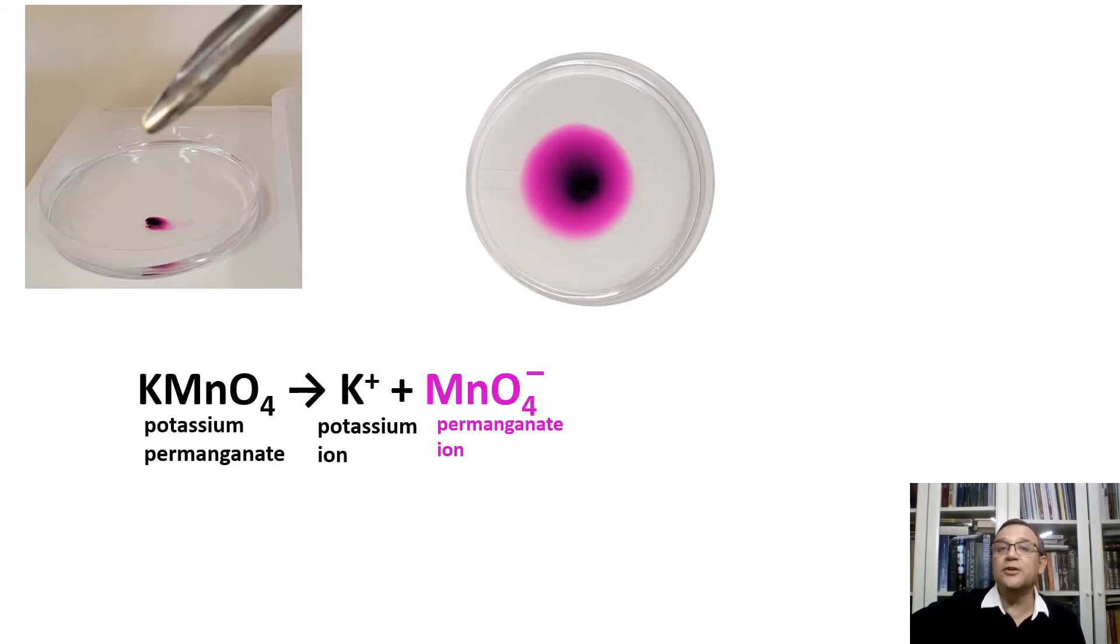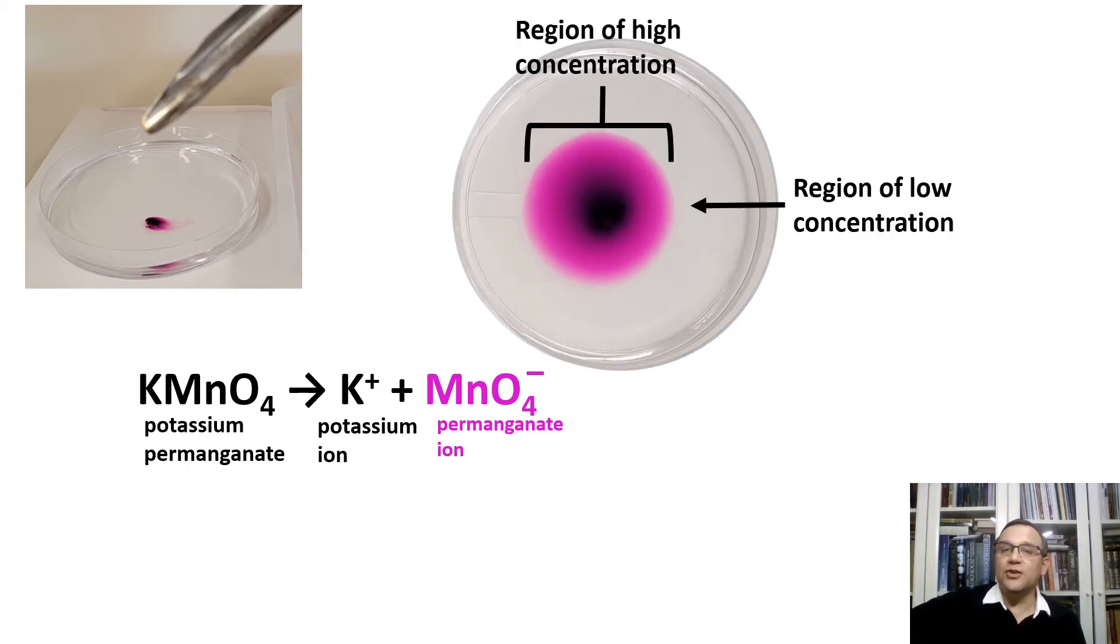As the crystals dissolve, the immediate area around the crystals becomes highly concentrated with potassium permanganate ions. This creates a region with high concentration of potassium permanganate ions. Do you see the dark purple color is concentrated around the crystals? Here they are, the ions of potassium permanganate. Initially around the crystals, the concentration of potassium permanganate is very high. This area has a large number of potassium permanganate ions in a relatively small volume of water.